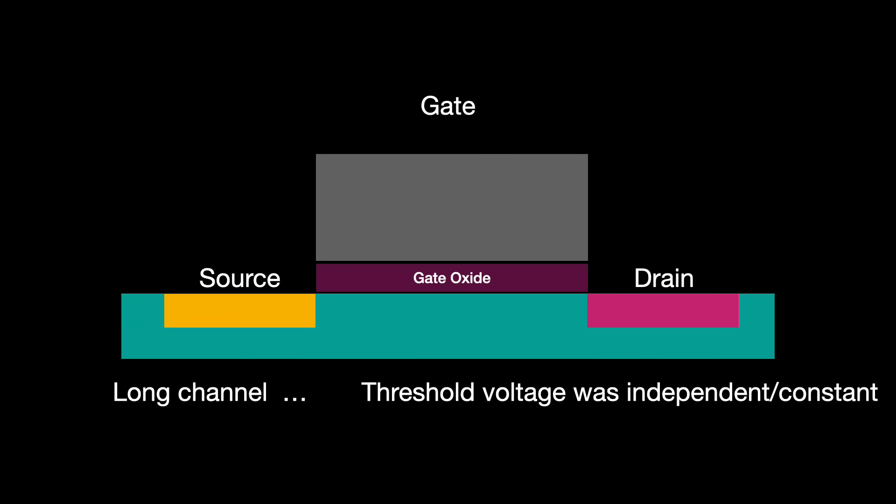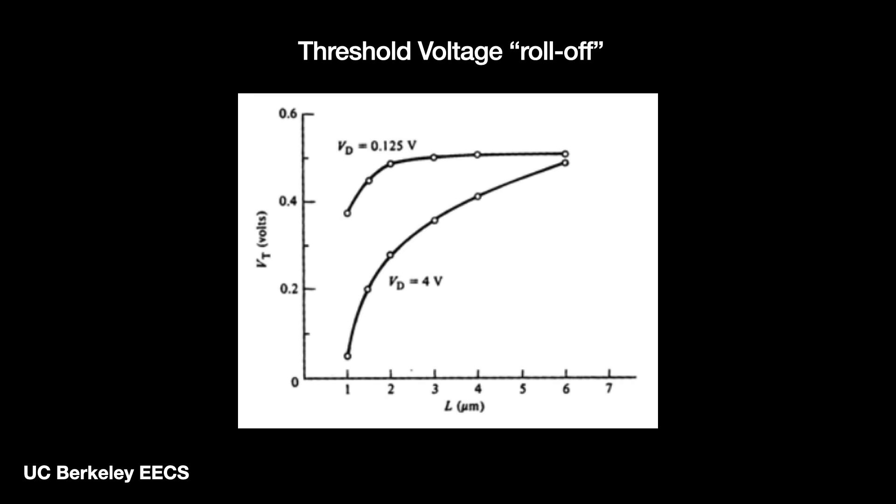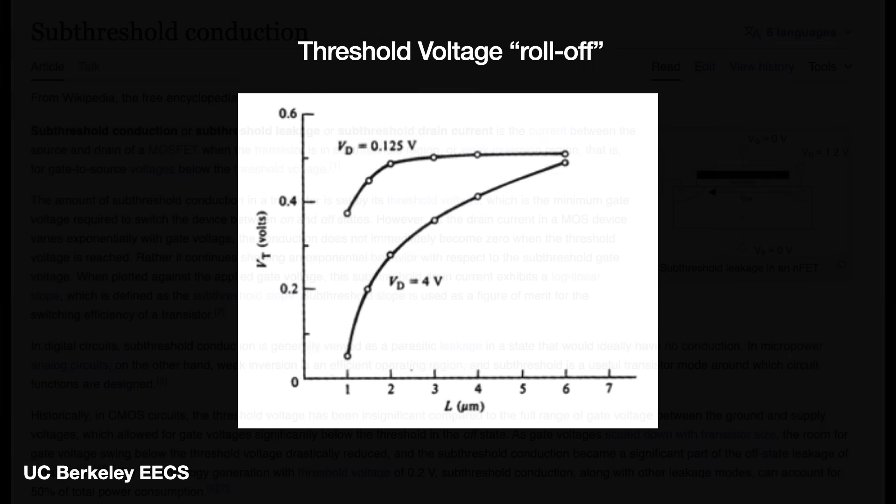we discovered that the threshold voltage was no longer constant and independent. Instead, it was decreasing. Or rolling off as the channel shortened. This in turn exacerbates something called sub-threshold leakage.